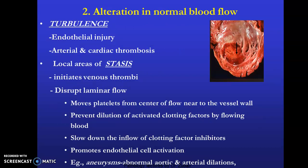The second factor is alteration in normal blood flow, referred to as turbulence. When there is endothelial injury such as in arterial and cardiac thrombosis, local areas of stasis initiate venous thrombi. In addition, disruption of laminar flow leads to movement of platelets from the center of flow toward the vessel wall, preventing dilution of activated clotting factors by flowing blood and slowing the inflow of clotting factor inhibitors.